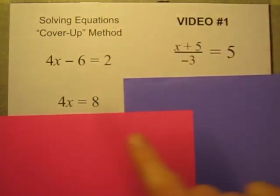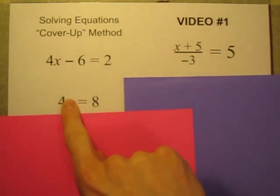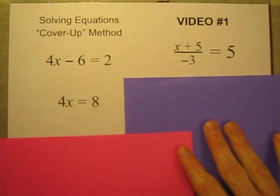Now let's do the same thing. 4 times what equals 8? And you could think, well, this is multiplying, so I have to divide to get rid of the times 4. But I think if you're thinking steps like that, you're making it too hard. 4 times what equals 8? 4 times 2 equals 8. x equals 2.